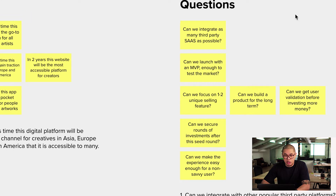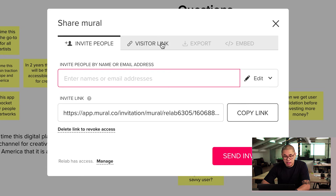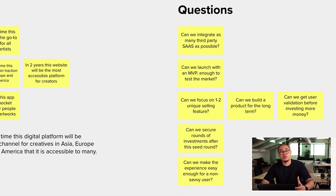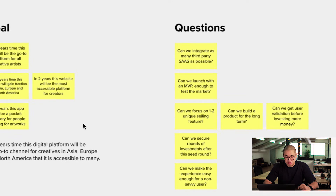Remotely, what you want to do is quickly share the visitor link. In Mural, we'd go to the visitor link tab, copy it, and then share it in the Zoom chat. Therefore, the stakeholders can open it — they don't need to sign up for anything. They can just view it and browse at their own pace as well.